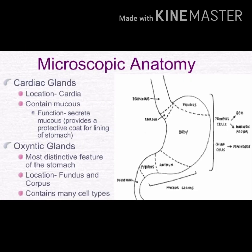The first gland type is cardiac glands, located in the cardiac region, which contain mucosa cells whose function is to secrete mucus, providing a protective coating for the lining of the stomach. The second type is oxyntic glands, which are the most distinctive feature of the stomach, located in the fundus and corpus regions and containing many cell types.